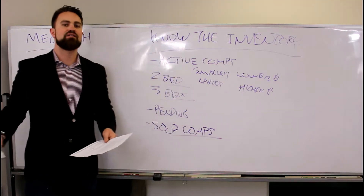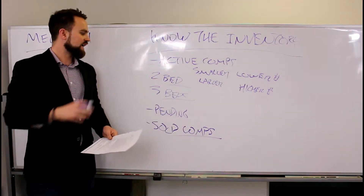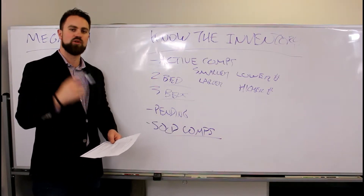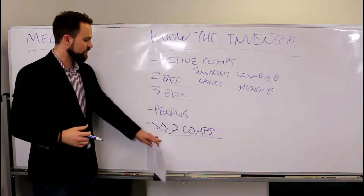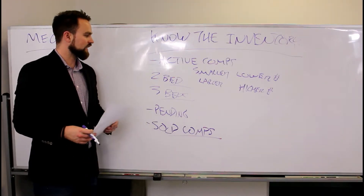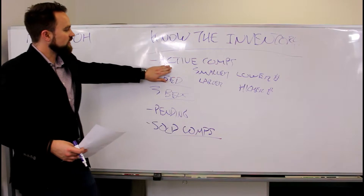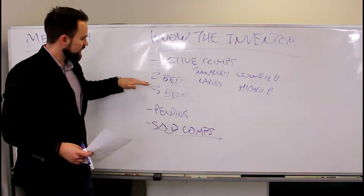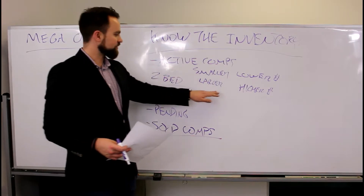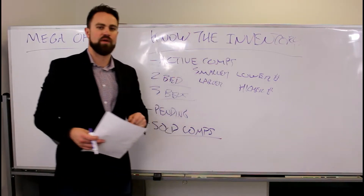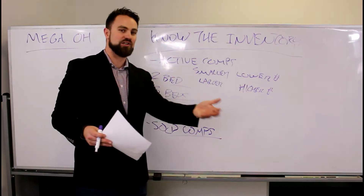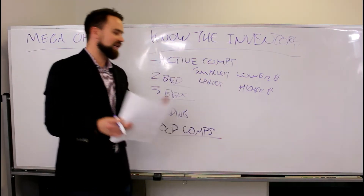For sold comps, be able to justify value — explain that other properties sold for $20,000 more than this one and it's going to go fast. The more you know about the inventory, the better you can explain this to future buyer clients. If someone comes in looking for a three-bedroom and you're hosting a two-bedroom, knowing there's an active three-bedroom comp down the street makes you look like an expert. With two partners, one of you can actually go view that other property during the open house and write an offer.